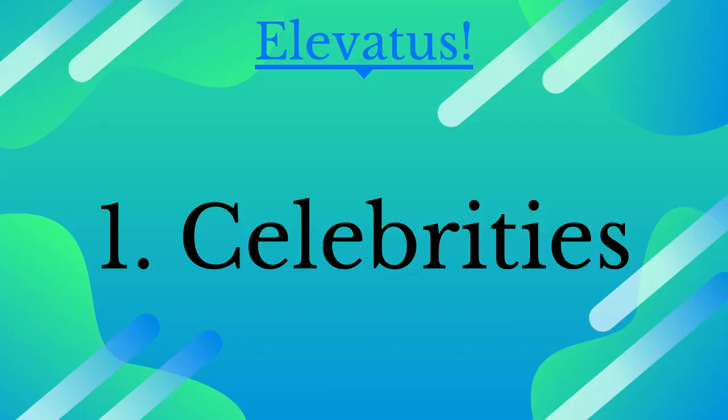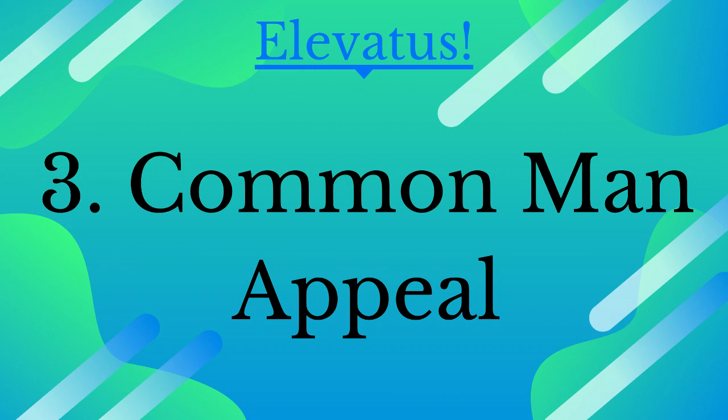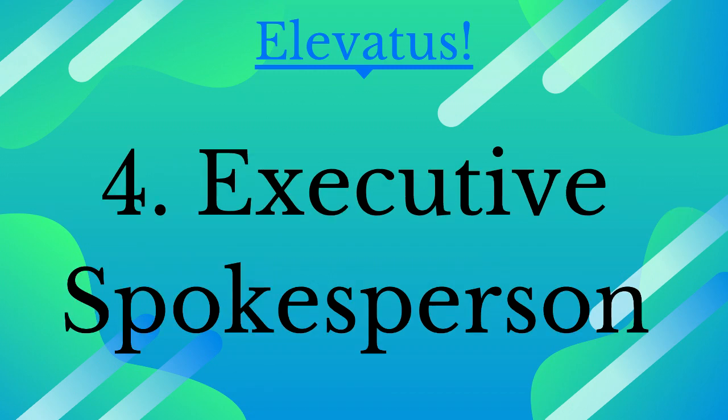To sum up, the four types of reference group appeals are: celebrity appeal, which has four different sub-types; expert appeal as the second; the third is common man appeal; and the fourth is executive appeal. Thank you for staying with me. Do like this video and share it with at least one person who you think might benefit. We all have to elevate our mindset. Thank you.